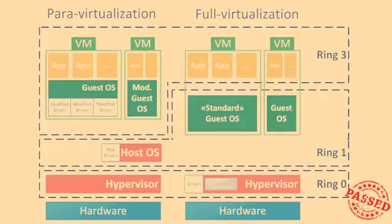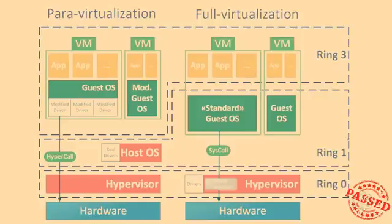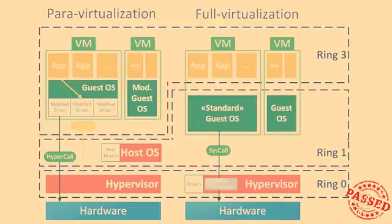Hypervisors usually solve this problem with either para or full virtualization. In the para virtualization method, when a privileged command must be executed on the guest OS, it is delivered to the hypervisor through a hypercall — a kind of system call — and the hypervisor receives this hypercall, accesses the hardware, and returns the result. Para virtualization requires some modifications to the guest operating system kernel in order to use the hypercall mechanism. Thanks to hypercalls, virtual machine applications and operating systems run in CPU ring three, the least privileged CPU mode.